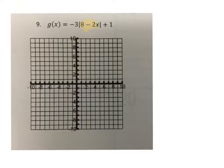So we do that: 8 minus 2x equals zero, negative 2x equals negative 8, so x equals 4.